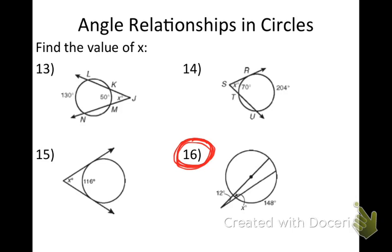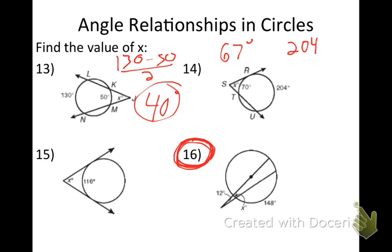So number 15. I want to find angle X. What does X come out to be, Tina? 40. It is 40 degrees. How'd you find that out? 180 minus 100, divided by 2. Nice job. Number 14. What do you have for an answer to 14, Noah? 67. How'd you find that? I subtracted 70 from 204 and divided by 2. Nice job.